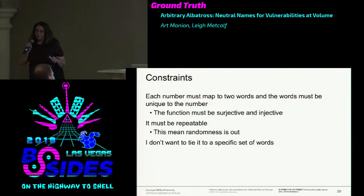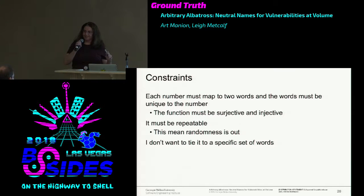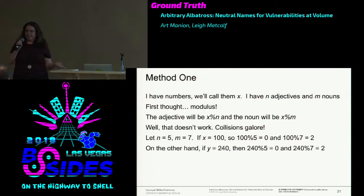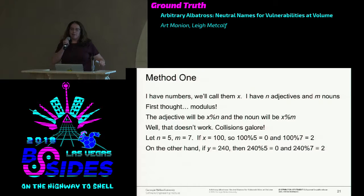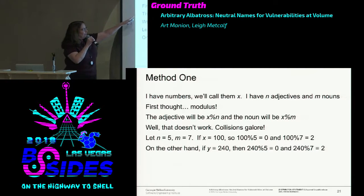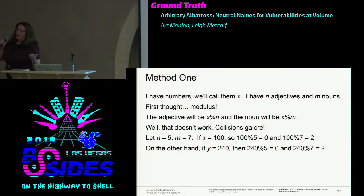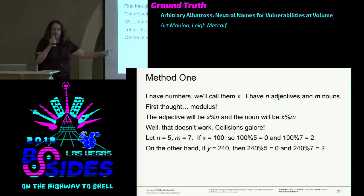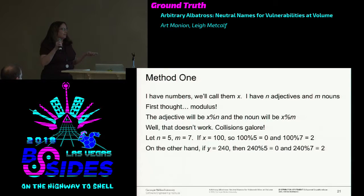I don't want to tie it to a specific set of words—each of the four sets I showed has its own little bits of problems. The first method is fairly easy: use modulus. I have N adjectives and M nouns. The adjective will be the number I'm trying to map modulus N, and the noun will be the number modulus M. Well, this fails for collisions—it's very easy to run into collisions, as a simple example shows. So method one is out.